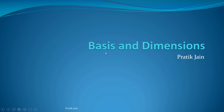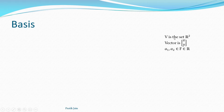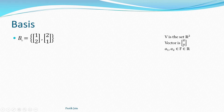In this video I am going to discuss basis and dimensions of a vector space. Consider an example where V is R², my vector space is R², and my vector is x comma y — a two-tuple belonging to the field of real numbers. Now consider a set B which contains the vector (1,2) and another vector (2,1).